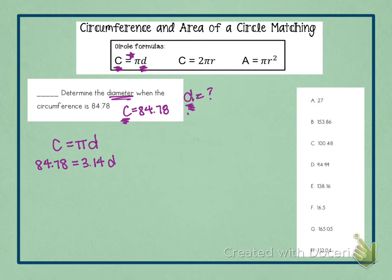Now this is a simple one-step equation where this is multiplication right here. So we are going to divide to solve. And we are dividing by 3.14. So then 3.14 divided by 3.14 is 1. So we have d left over. And then 84.78 divided by 3.14.